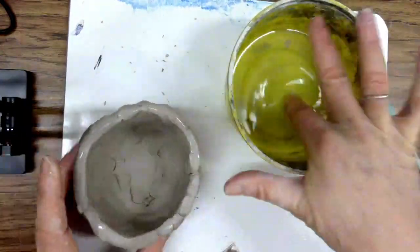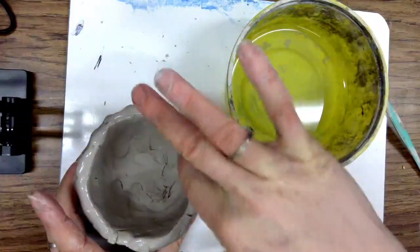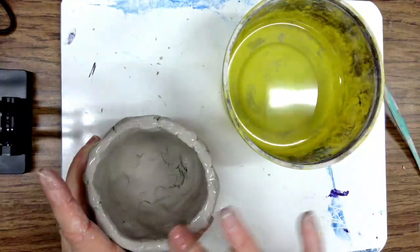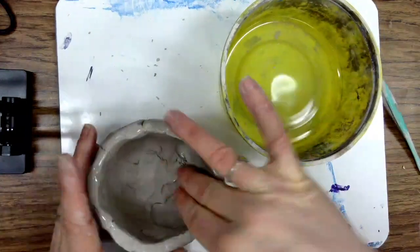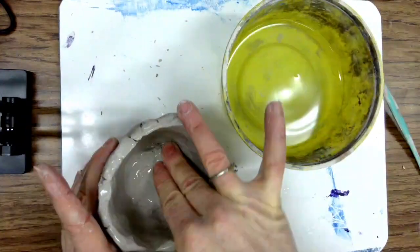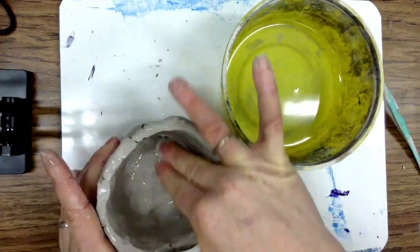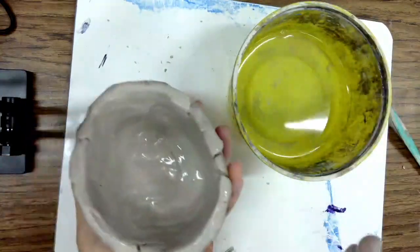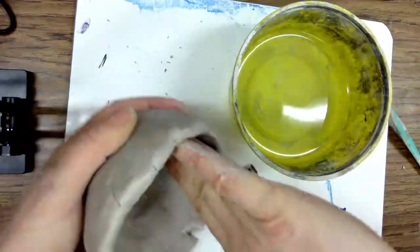When you're satisfied with the size and shape of your pinch pot, you can start smoothing it out with a little bit of water. Don't use too much water. Seal it with as few cracks as possible.